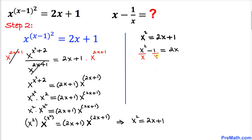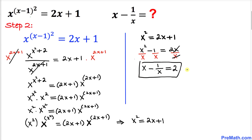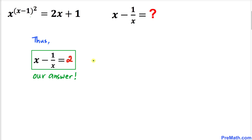Dividing across by x: x squared divided by x gives x, minus 1 over x, equals 2x divided by x which is 2. So therefore our value of x minus 1 over x turns out to be 2, which is exactly what we were looking for. Thanks for watching and please don't forget to subscribe to my channel for more exciting videos.